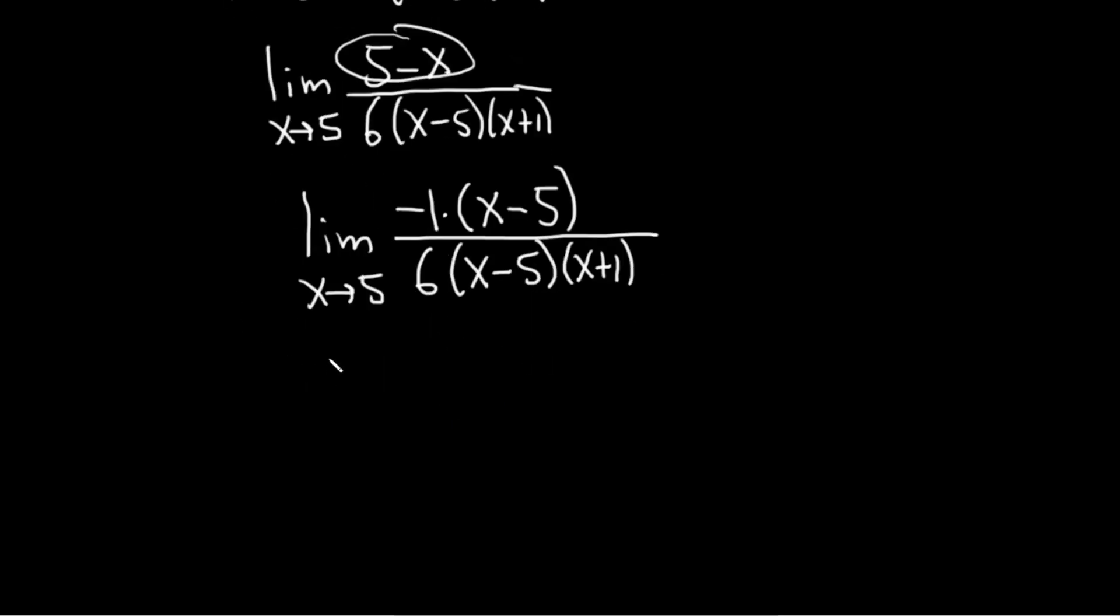So this is the limit as x approaches 5. These go away. So we end up with negative 1 over 6 parentheses x plus 1.